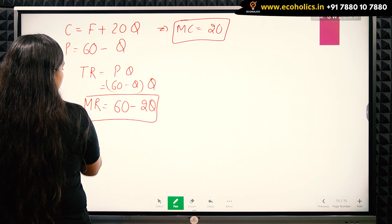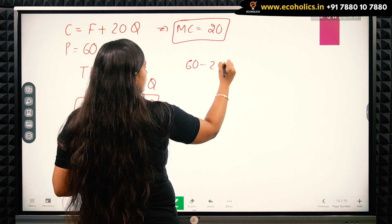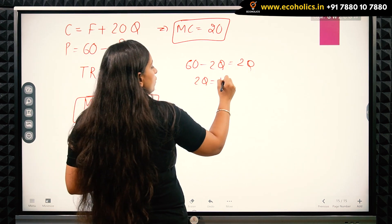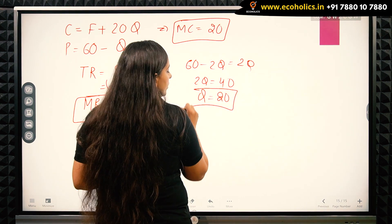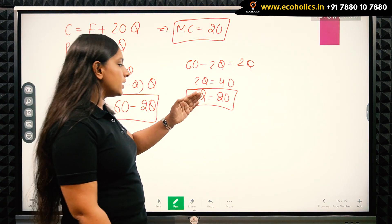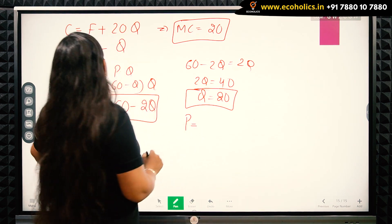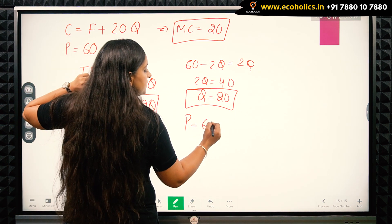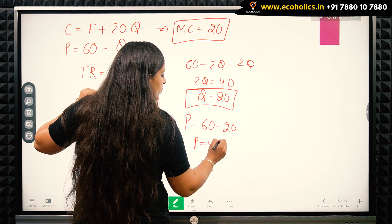Equating marginal revenue and marginal cost: 60 − 2q = 20, so 2q = 40, giving q = 20. This is the quantity the monopolist will be selling in the market. Substituting back into the inverse demand function: P = 60 − 20 = 40. So the price in this market is 40.